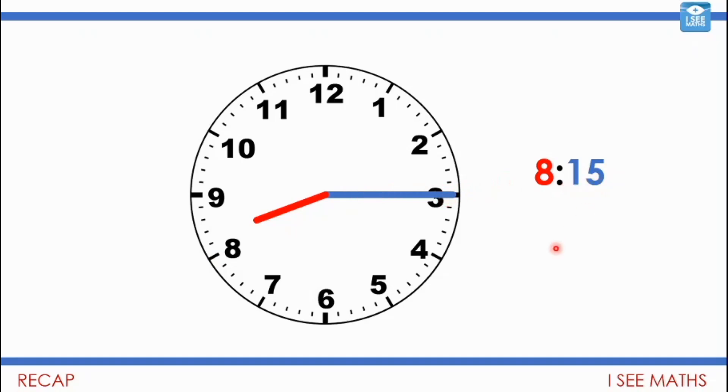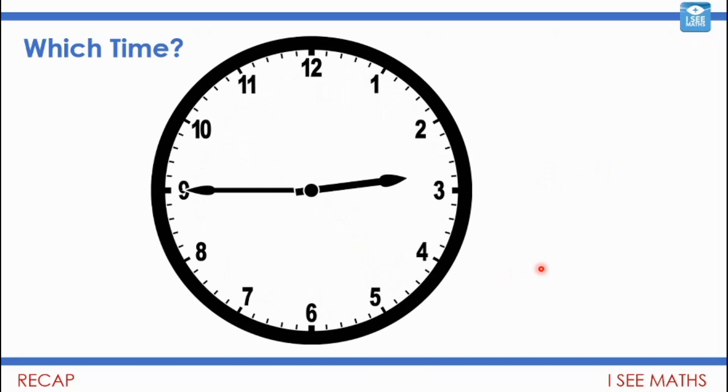And 4:50—we know it's 50 minutes because it's 10 lots of five minutes with the minute hand, and the hour hand is between four and five. It is 4:50 even though the hand is close to five because it hasn't reached five yet.